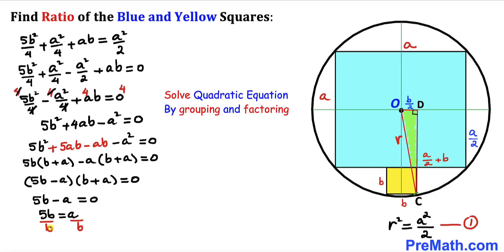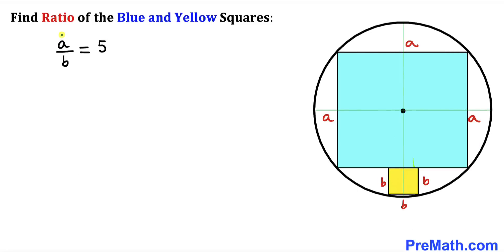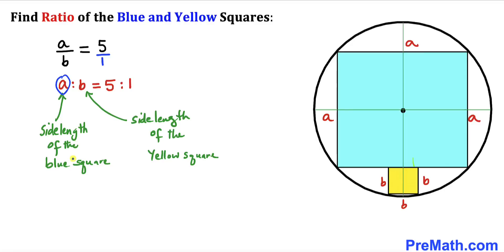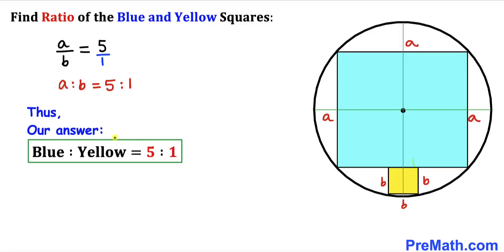Dividing both sides by b gives a/b = 5, or a : b = 5 : 1. Since a represents the side length of the blue square and b represents the side length of the yellow square, the ratio of the blue square's side to the yellow square's side is 5 to 1. Thanks for watching, and please don't forget to subscribe to my channel for more exciting videos!